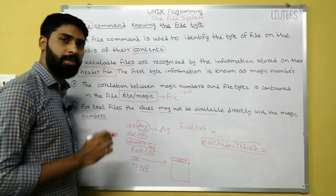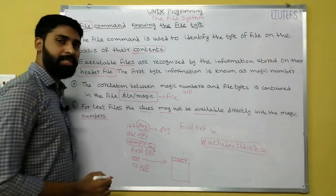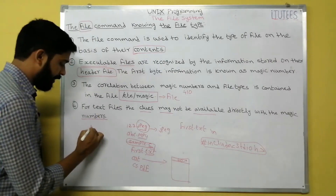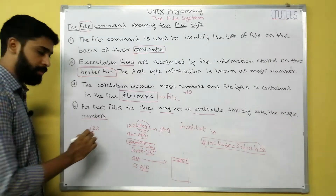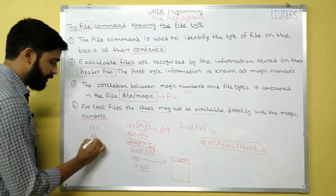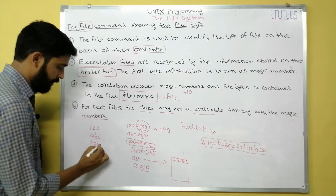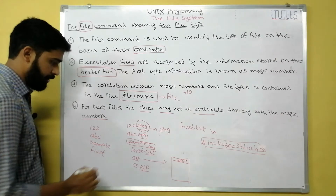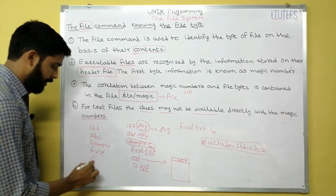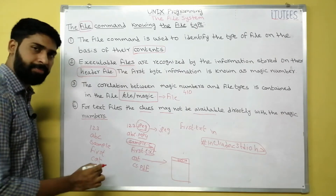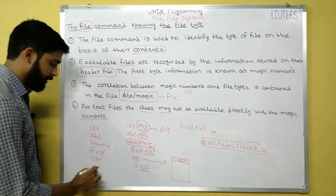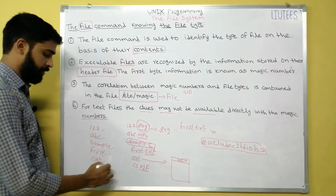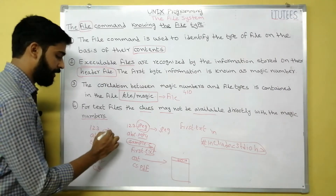So on my desktop: '123' is a JPEG file, 'abc' is a video file, 'sample' is a C file, 'first' is a text file, 'cat' is a command file, and 'cs' is a PDF file — and there are no extensions on any of these files.